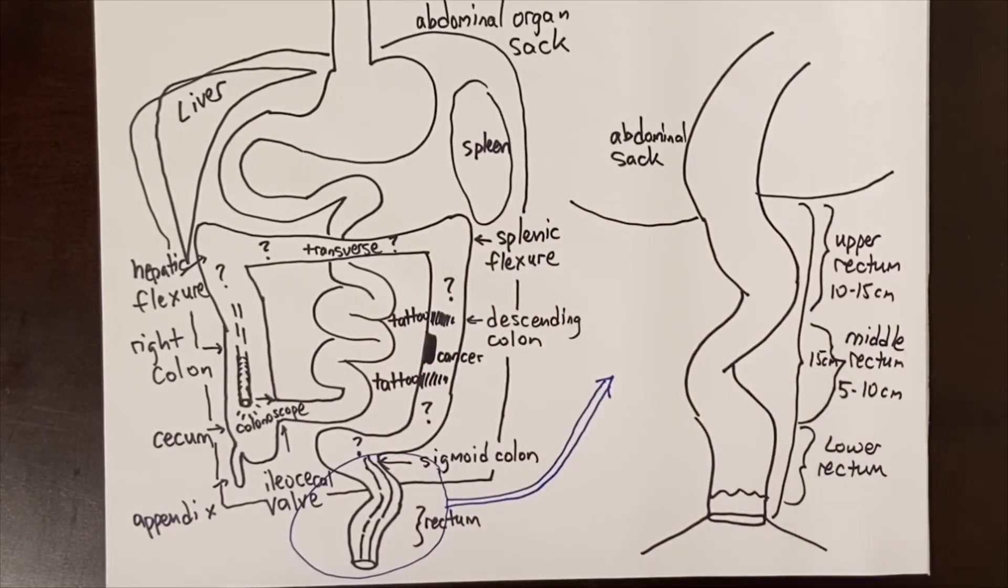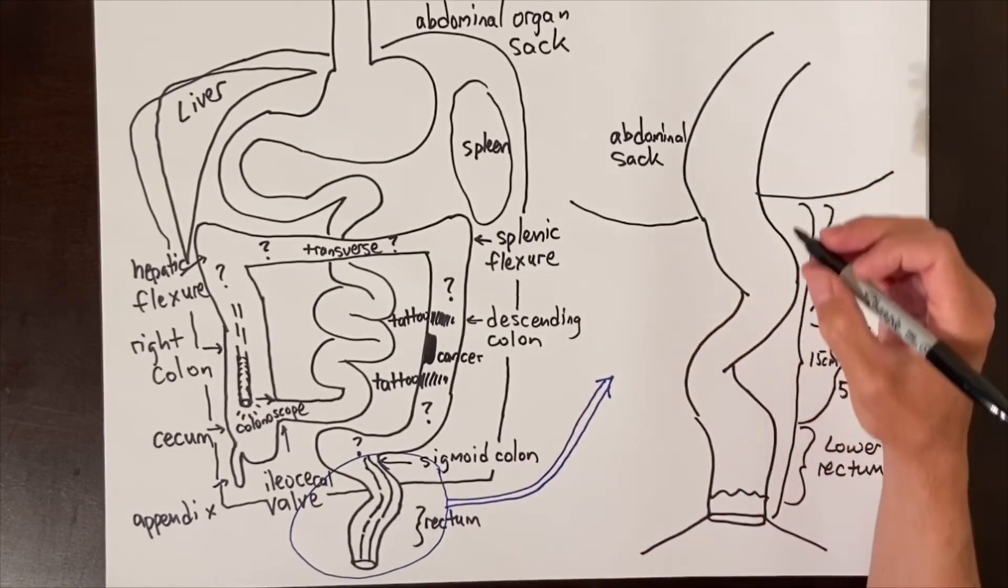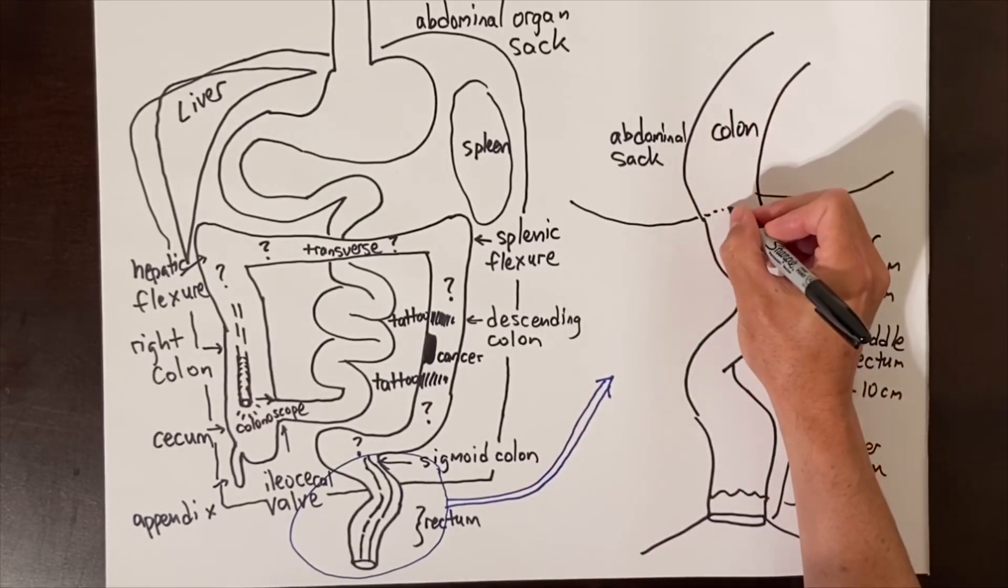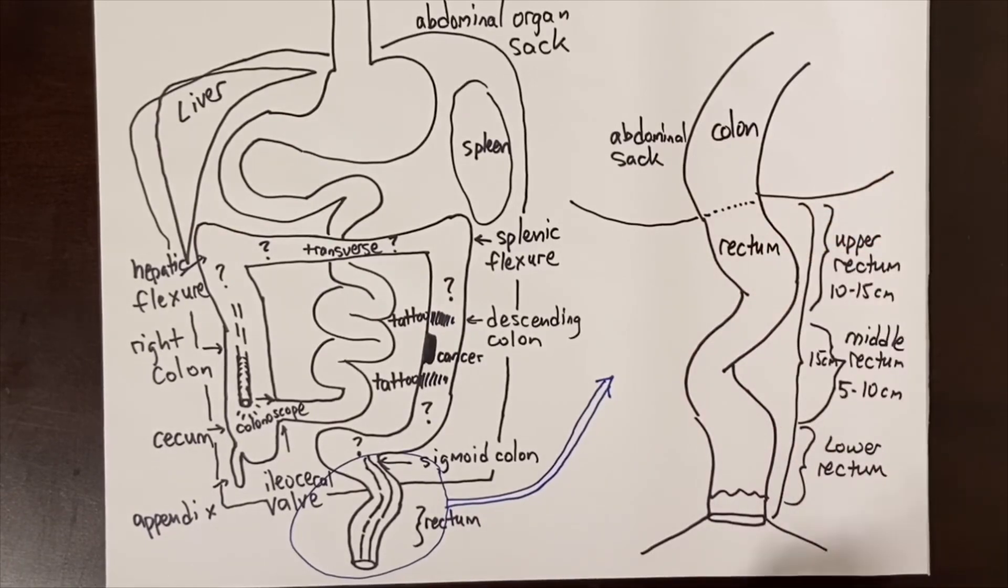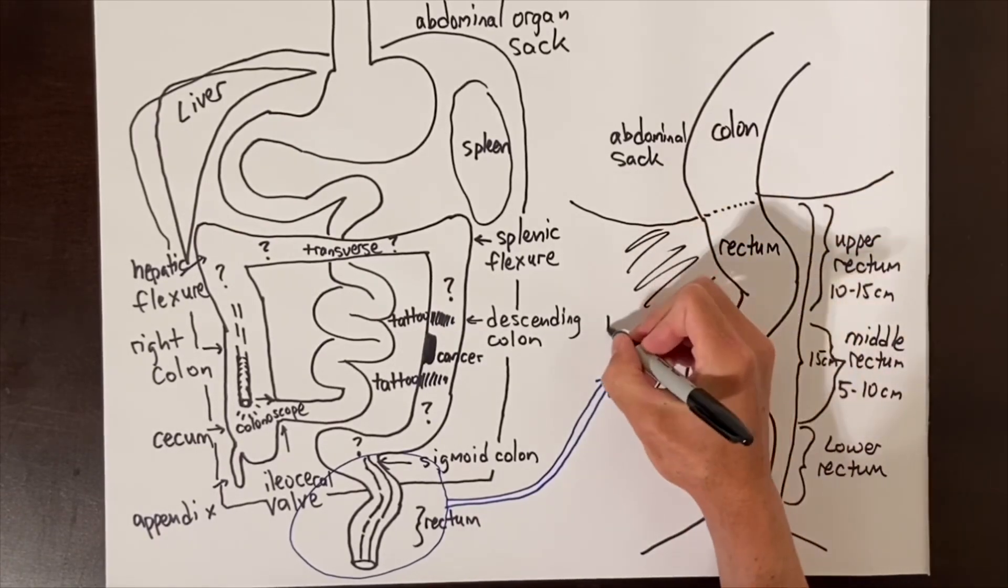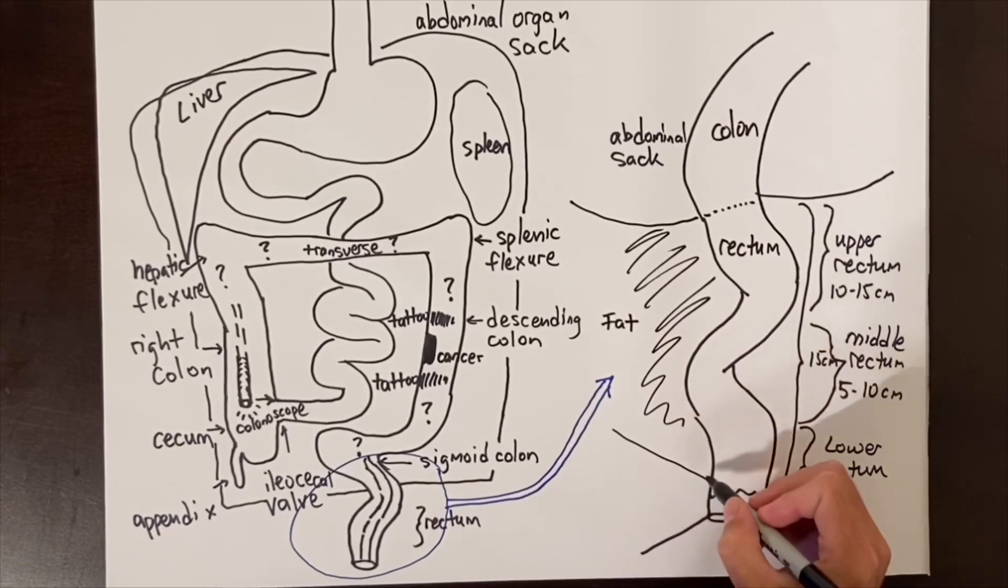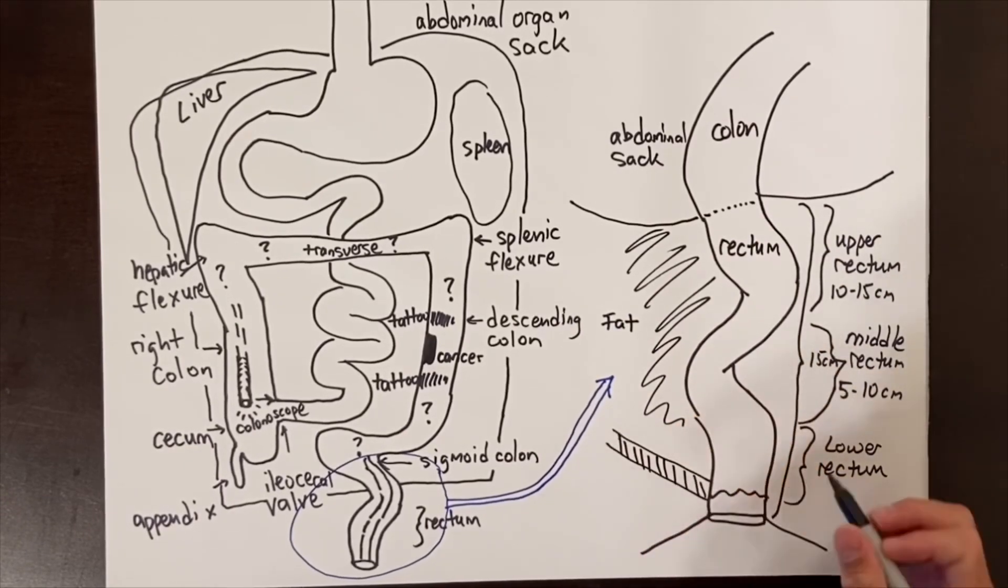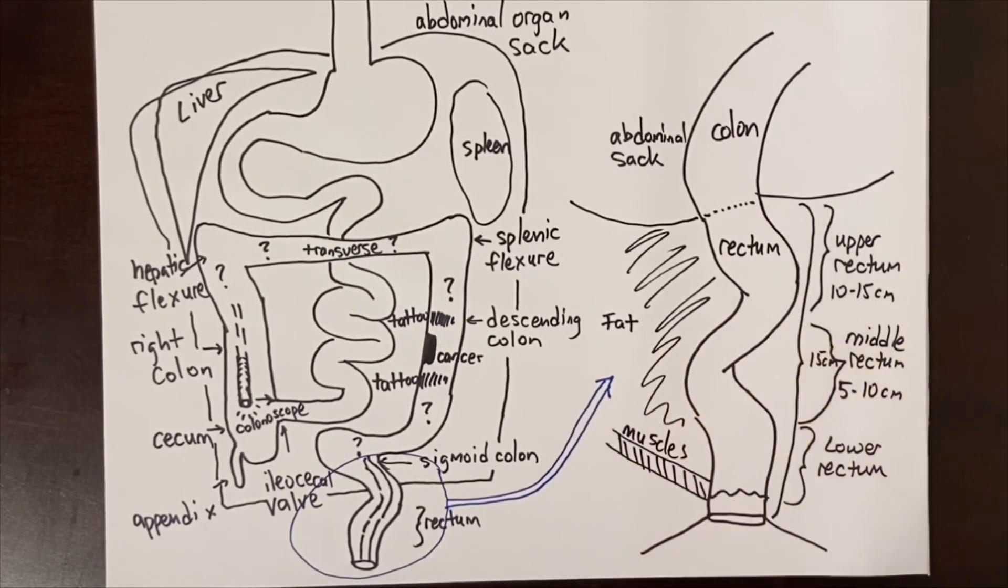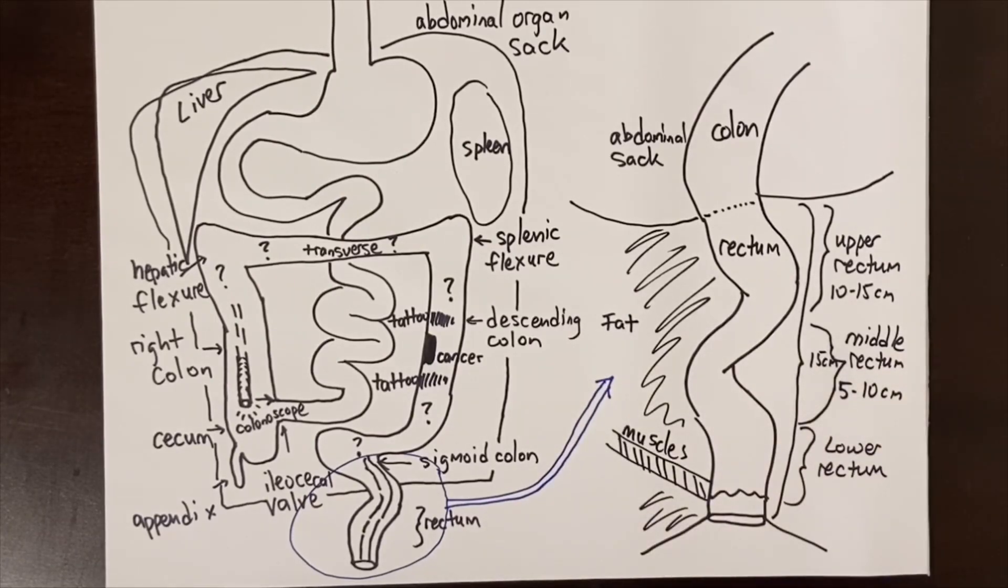Colon cancer refers to cancer that occurs from the ileocecal valve and anywhere through the colon down to the rectum. For a surgeon, the major treatment differences between colon cancer and rectal cancer are differentiated by the point at which the rectum goes into the soft tissue of the pelvis and leaves the abdominal space sac. Anything above this point, colon in the abdominal sac, is treated like colon cancer, and anything that is surrounded by the fat and muscle of the pelvis is treated like rectal cancer.